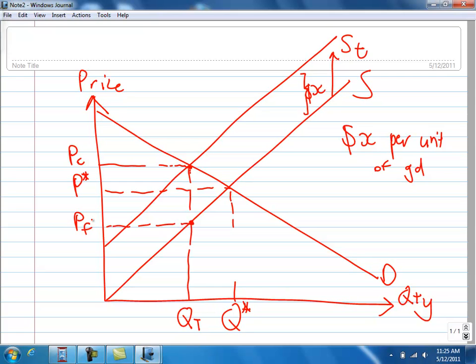So, what does this mean? This means that while consumers are paying PC, firms are receiving only PF. Again, where this distance here is the specific tax per unit, X dollars.